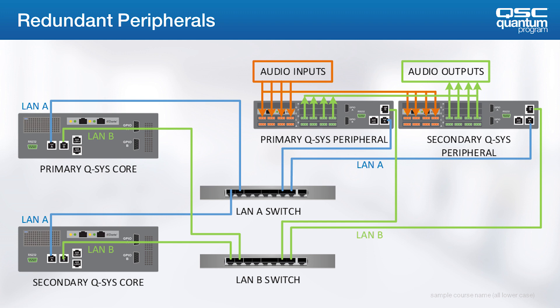If you've looked carefully in Q-SYS software, you may have noticed that there is no option for CXDQ or CXQ series amplifier redundancy. This is due to the need for switching the high-level loudspeaker line connections, which can be electrically tricky. If you have a project that requires networked amplifier redundancy, please contact your local QSC applications team and they can make some suggestions.